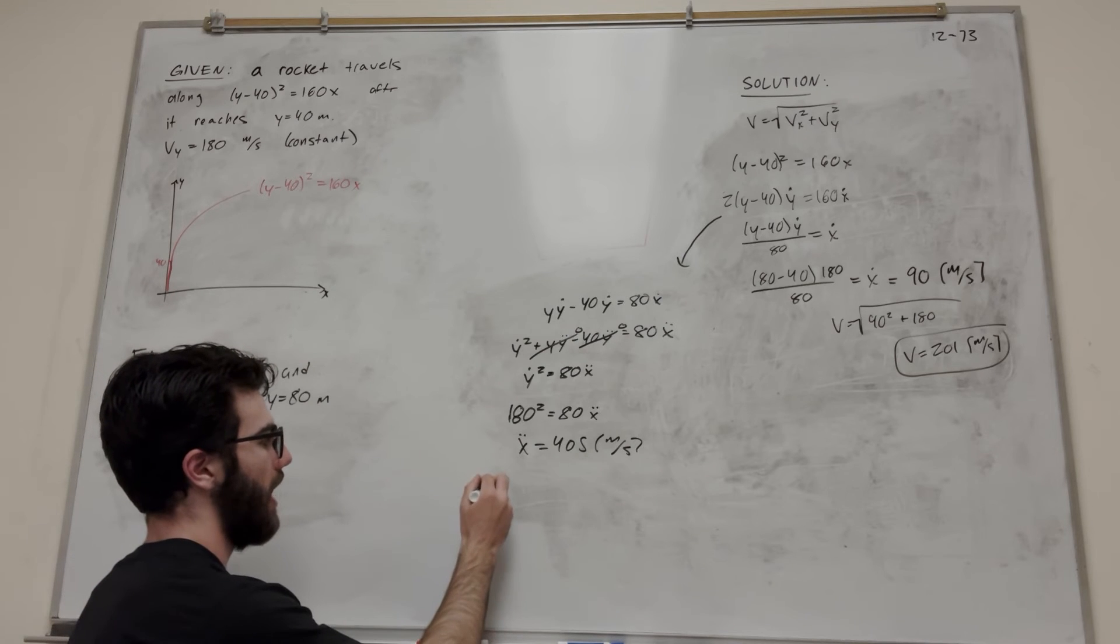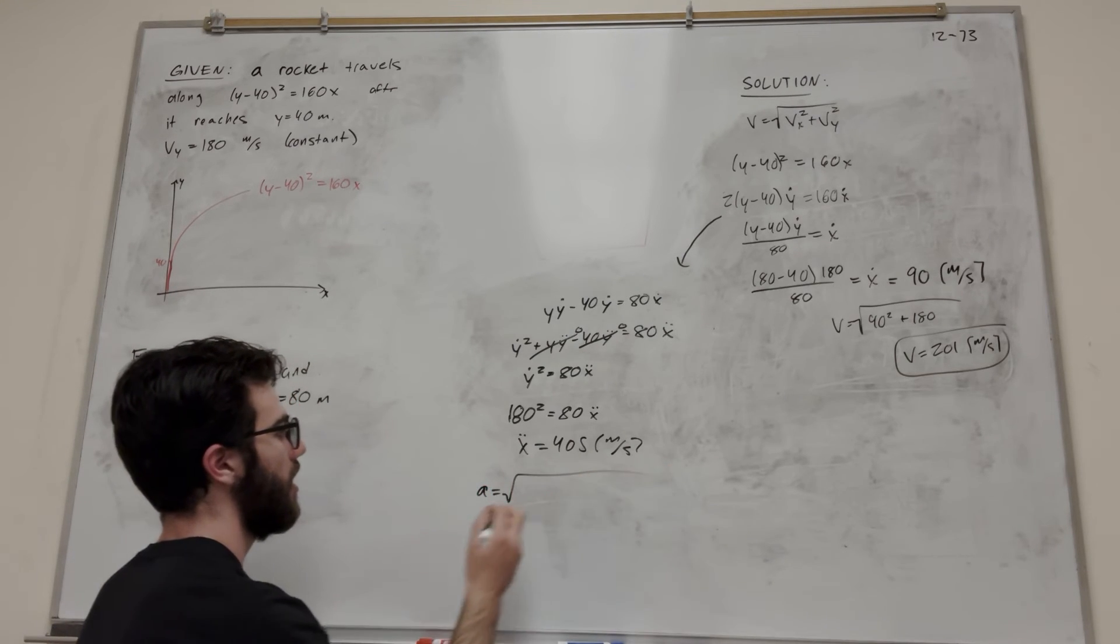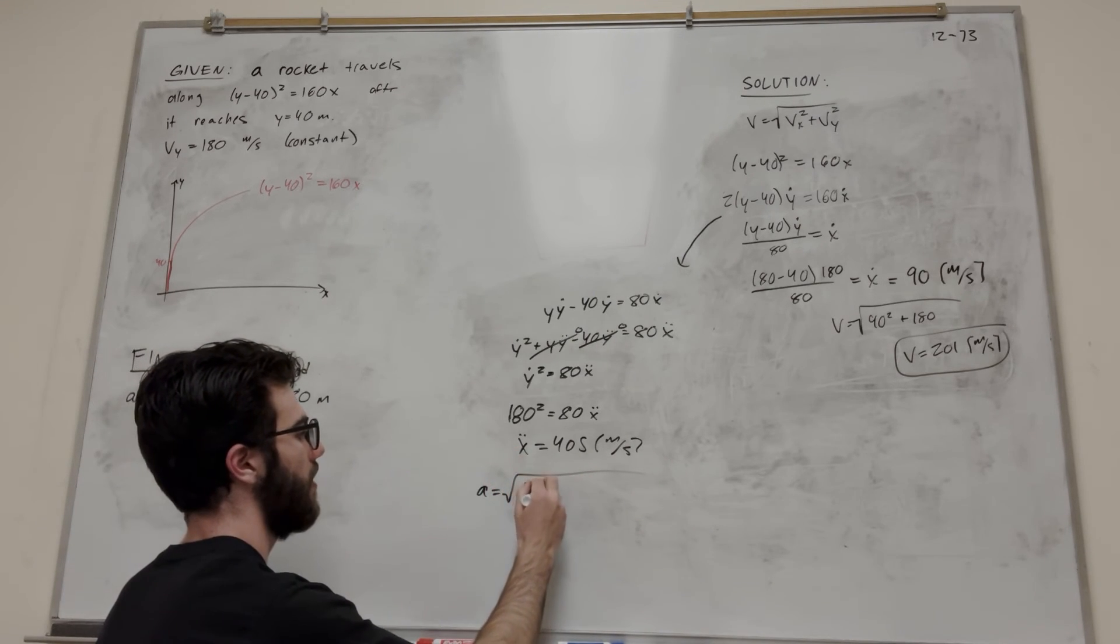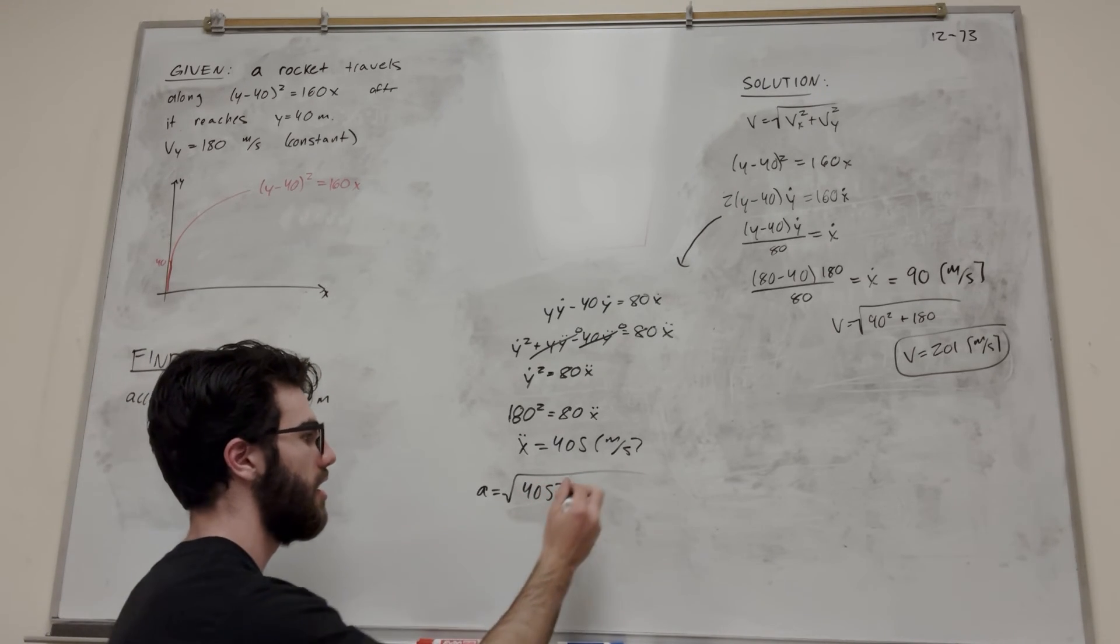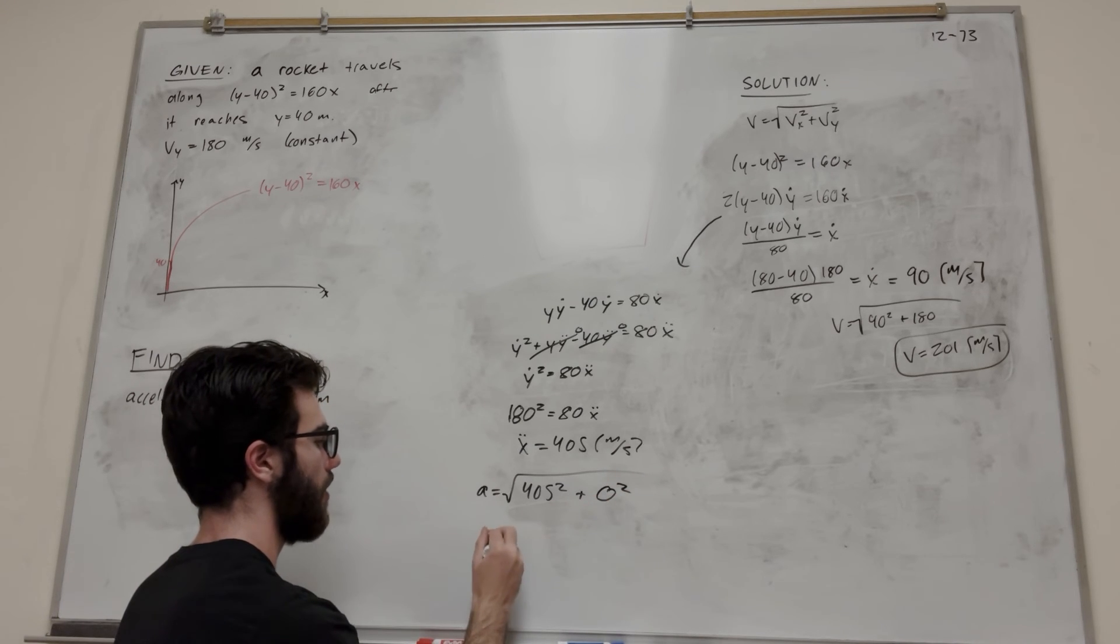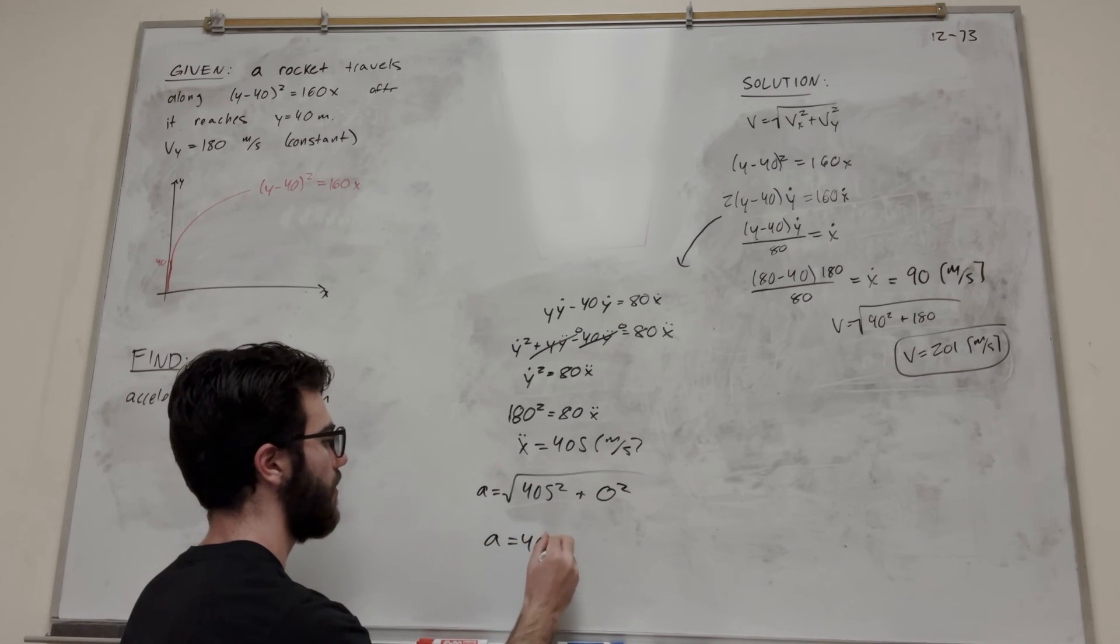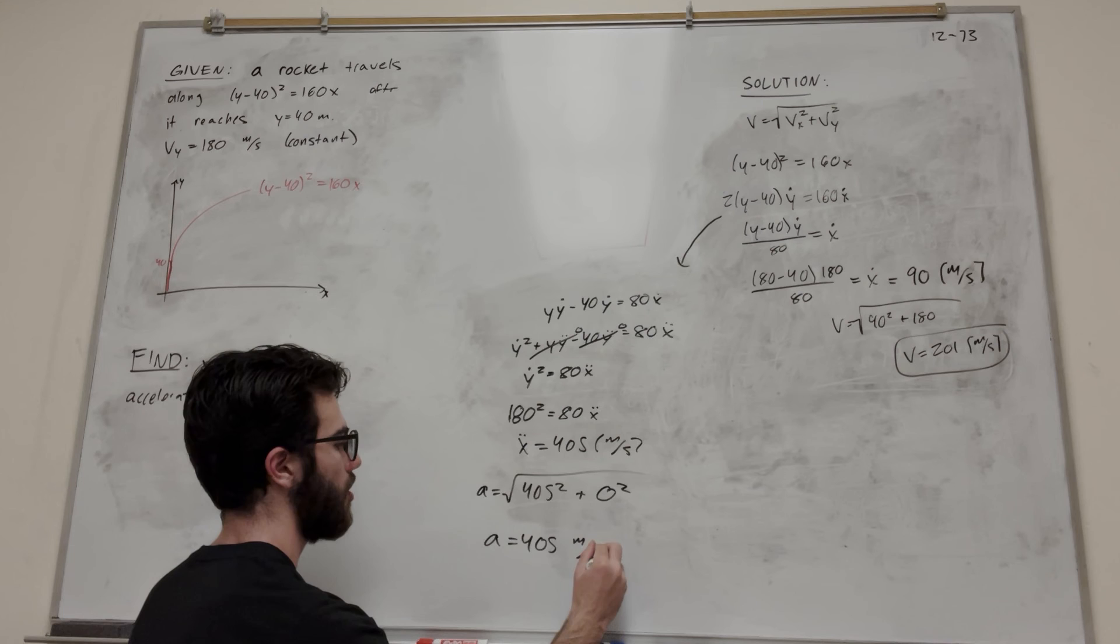If you want to find the magnitude of acceleration, we do the same thing. That's going to be 405 squared plus, but remember, we said there's no acceleration in the y direction, so this becomes zero squared, and we find the acceleration is 405 meters per second squared.